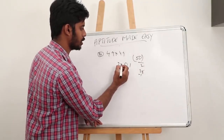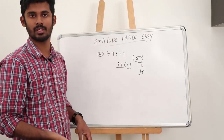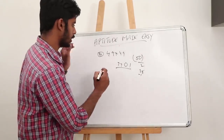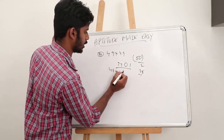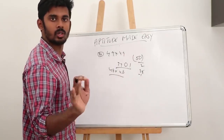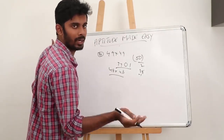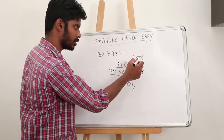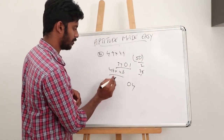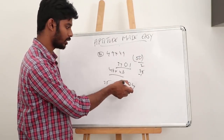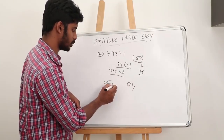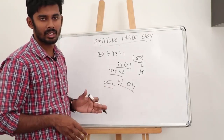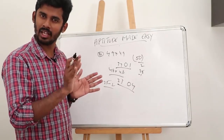For 48 squared: how close is it to 50? The difference is 2. 2 squared is 04. 50 divided by 2 is 25, minus 2 is 23. So 48 squared is 2304. As the numbers are very near to 50, you can see the answers are coming very easily.